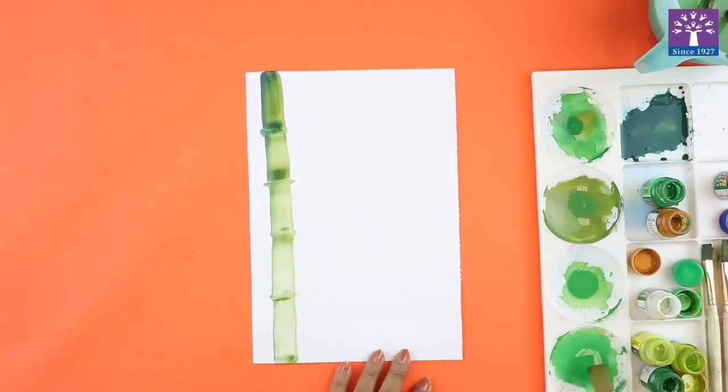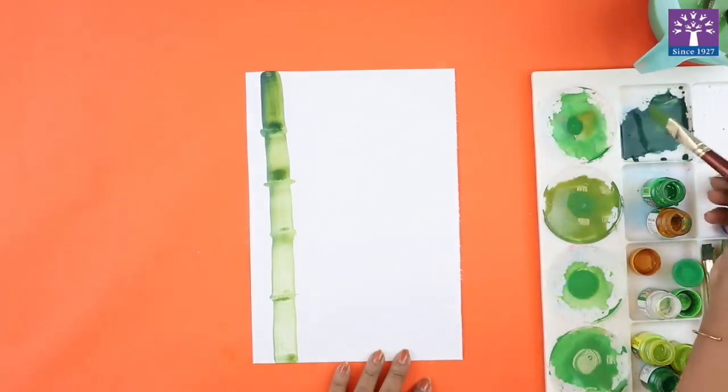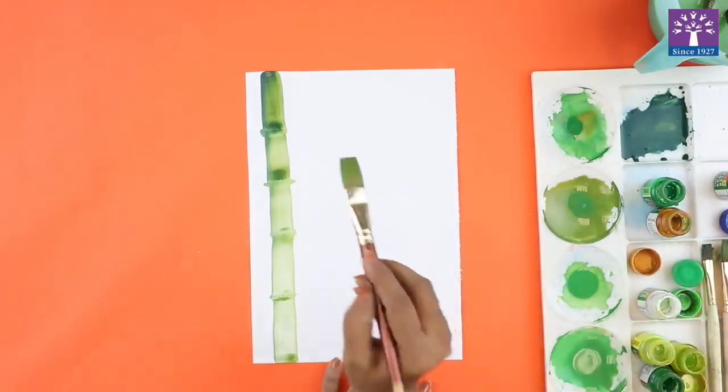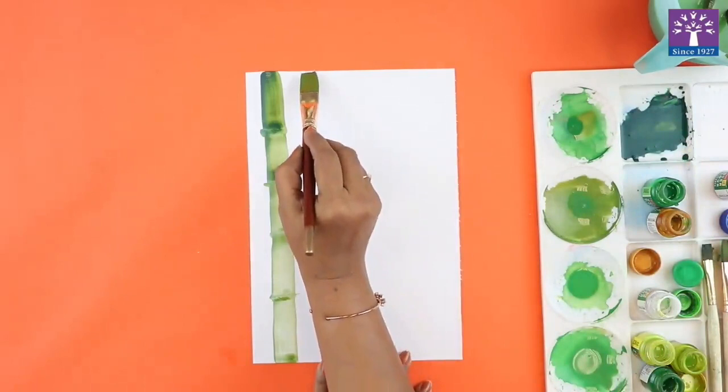You will follow the same technique. Load the brush in a different shade of green now. Again at the tip of the brush, I will take a dark color and follow the same technique.